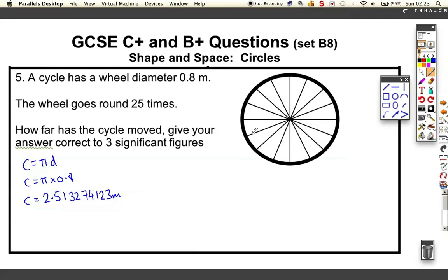The tire has a length of, in one revolution, it goes 2.5132 meters. So after 25 times, the distance travelled is that number times by 25. It would have travelled a total of 62.83185307 meters, which is approximately, because we're going to 3 significant figures, 62.8 meters.